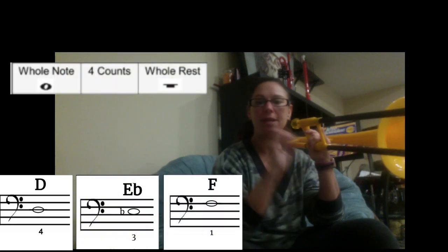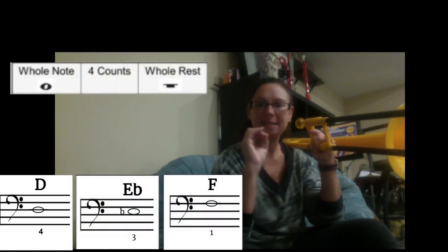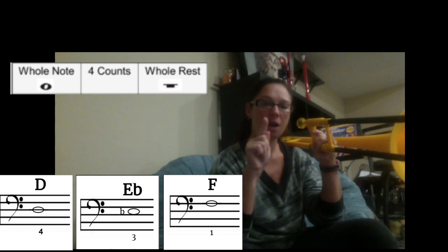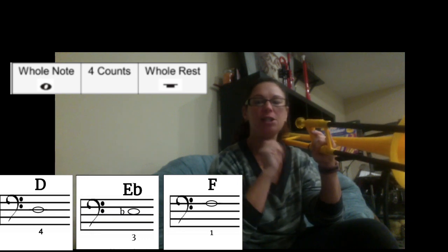Remember, a whole note is when you hold it for four counts and it's a big open circle. And when you have a colored in square in the measure, that means you're going to rest for four counts.